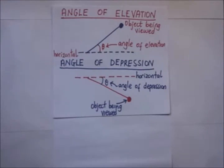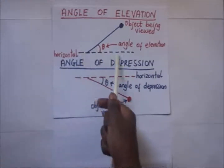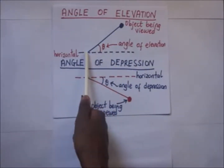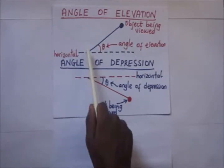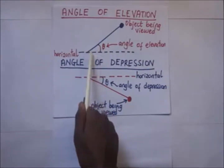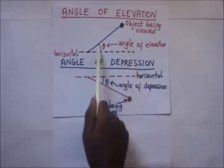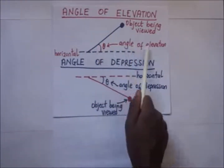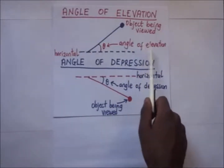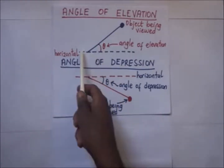Angle of elevation and angle of depression — we have two illustrations here to explain these phenomena. This line acts as a horizontal. Assuming you are standing at this point and viewing an object up, it means you have lifted your eyes and you're viewing an object. The angle between your line of sight and your horizontal is the angle of elevation. In other words, the angle of elevation is simply the angle that is above the horizontal line.